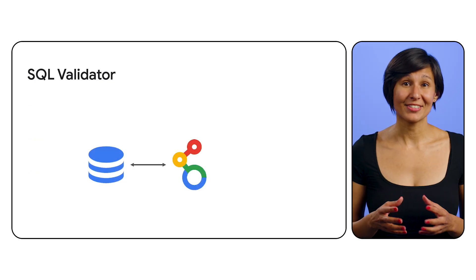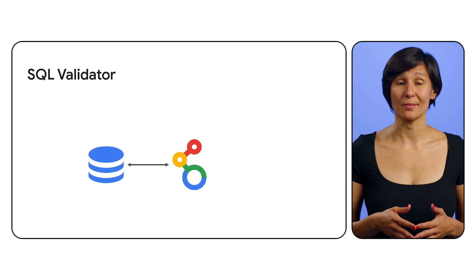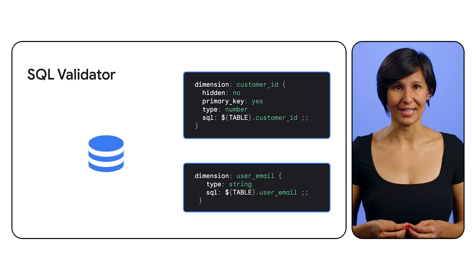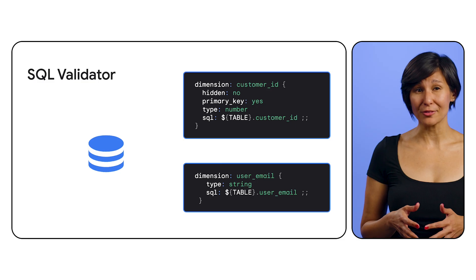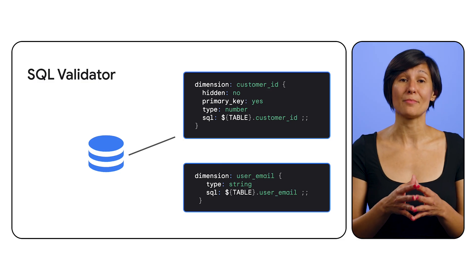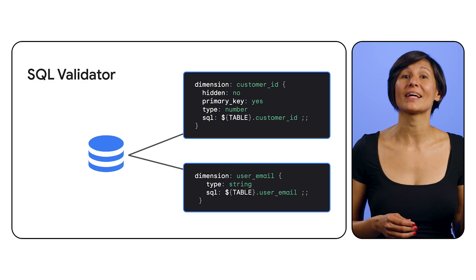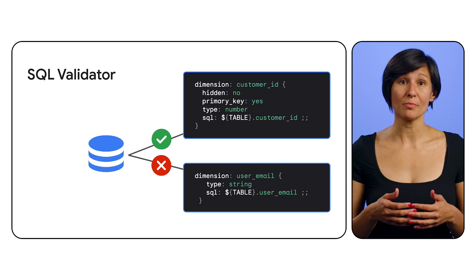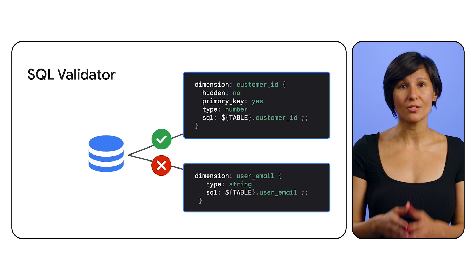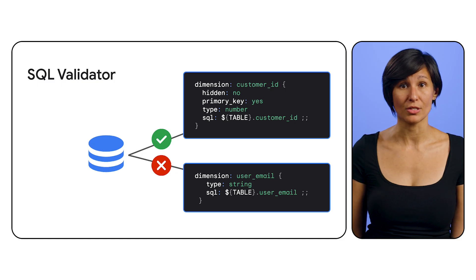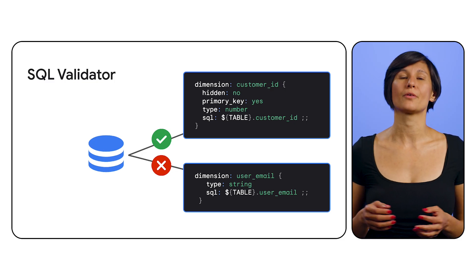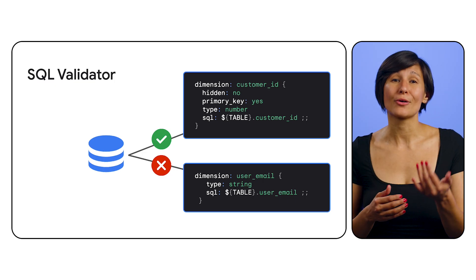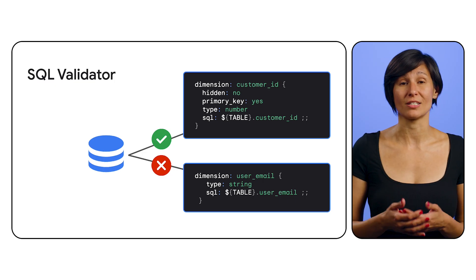When you connect to your data, whether you're connecting to a database or extending someone else's model, you're relying on that data to be correct and complete. The job of the SQL validator is to check that the dimensions in your LookML correctly map to your database tables. It will run all dimensions defined in your LookML to check for naming issues, typos, and missing or broken joins — anything that would prevent a query from running against your database. This allows you to correct your code or to address upstream changes with other teams.